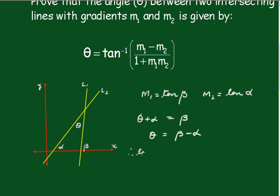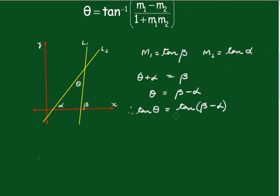Therefore, the tan of theta is equal to the tan of beta minus alpha. And expanding the right-hand side, we get the tan of beta minus the tan of alpha all over 1 plus tan beta tan alpha.